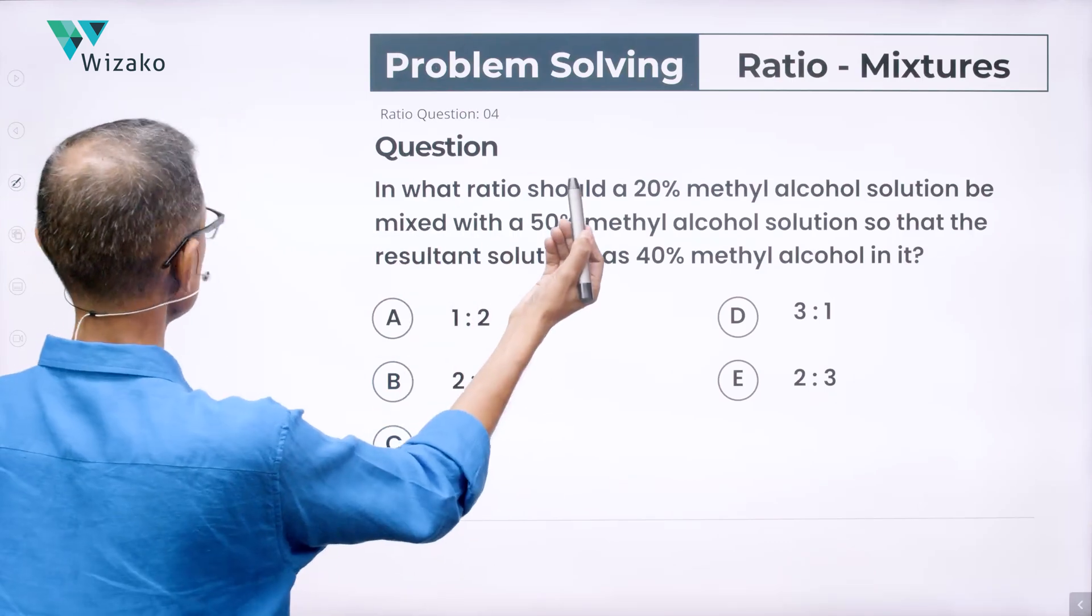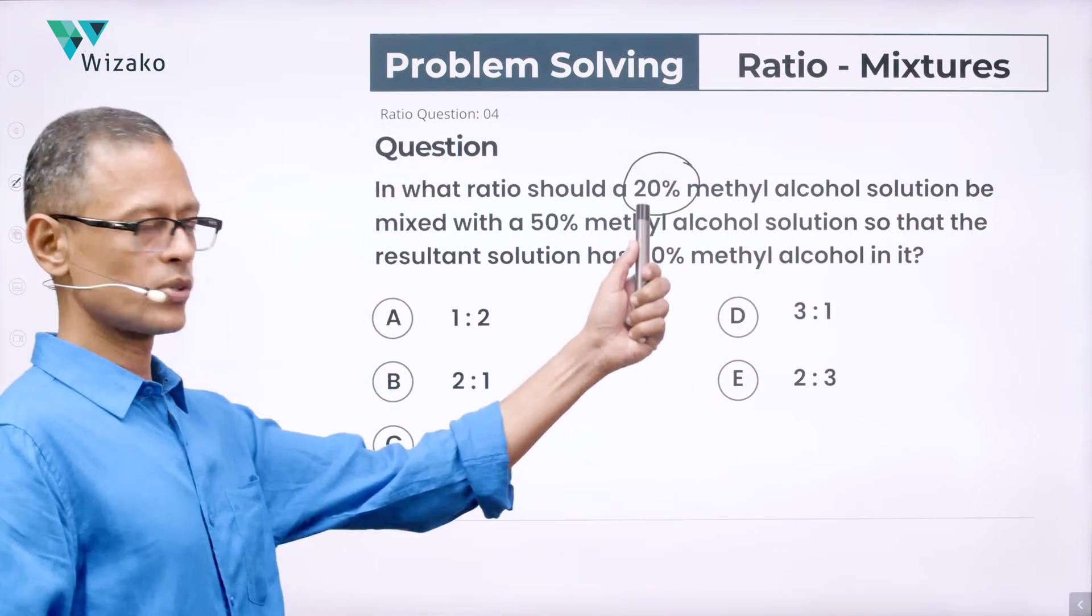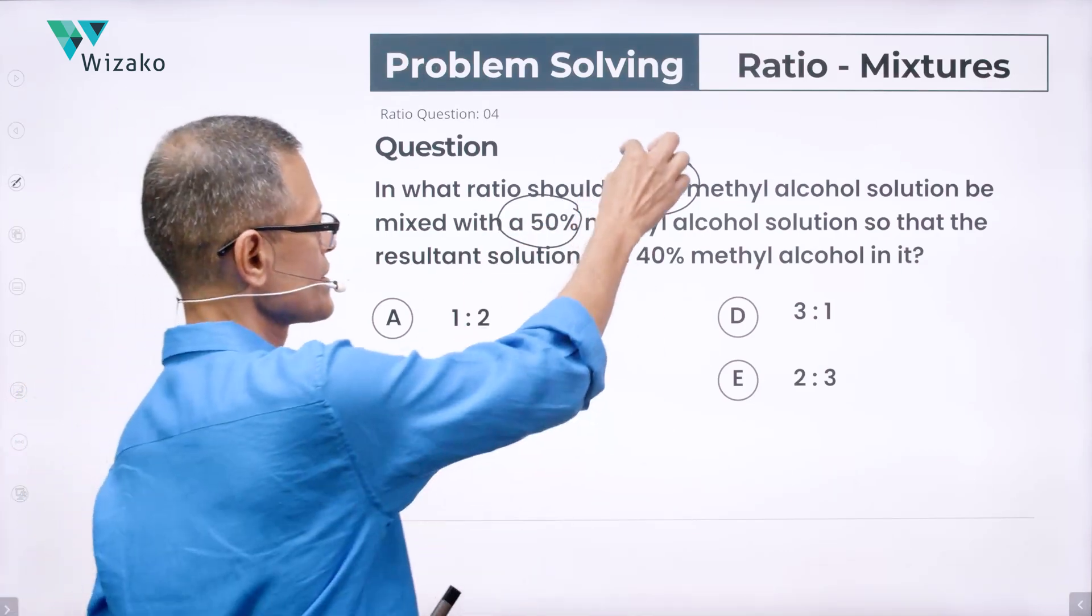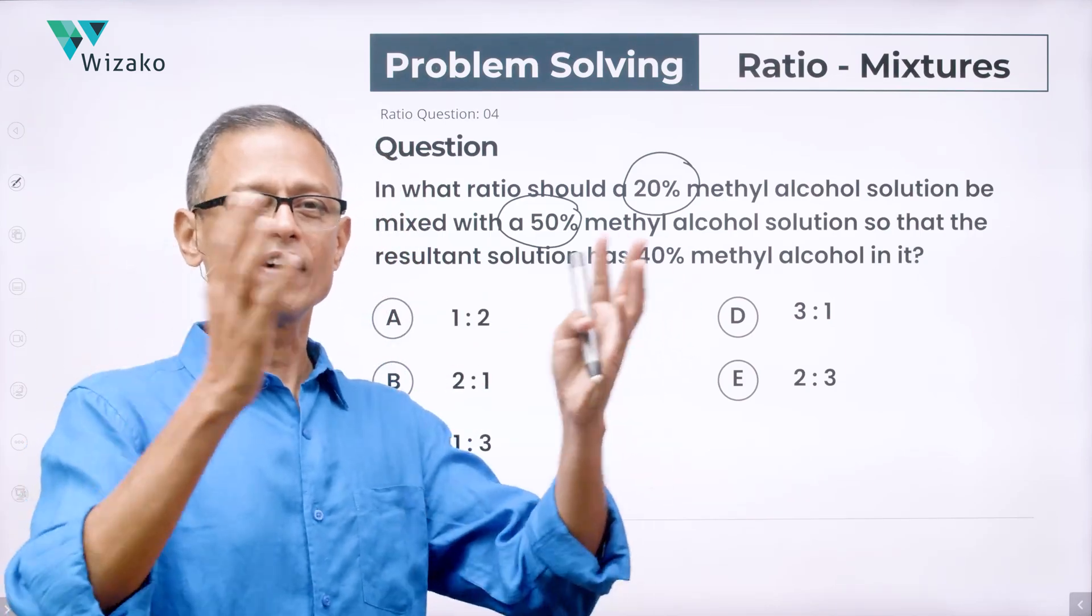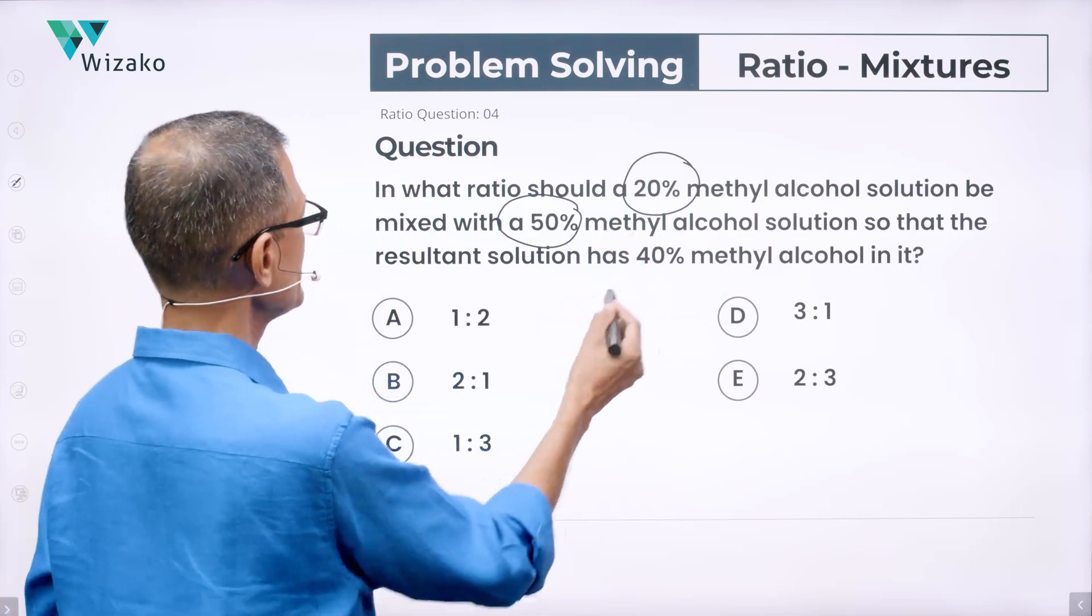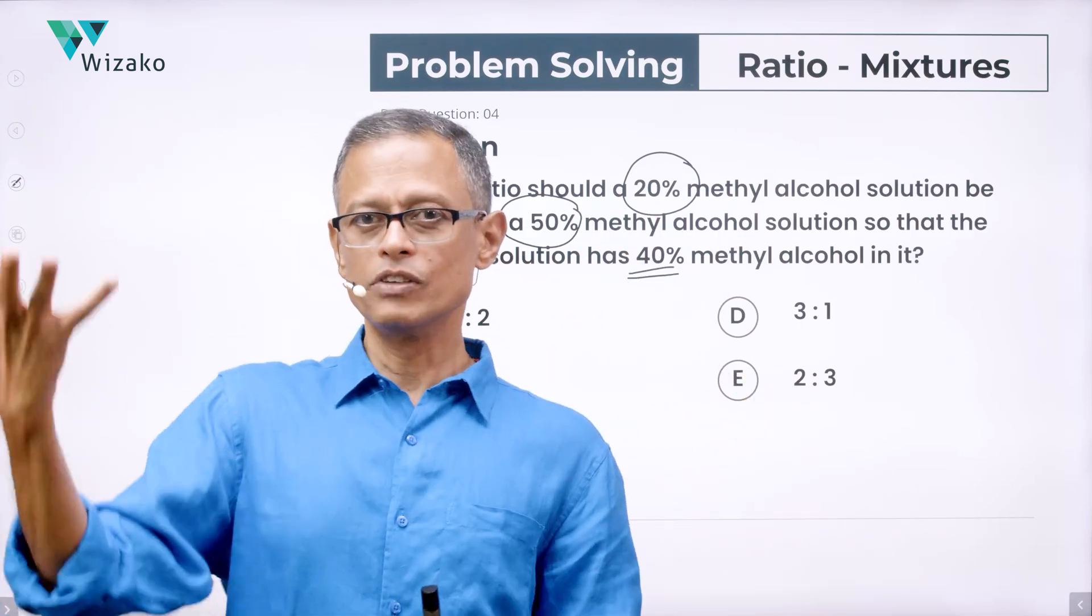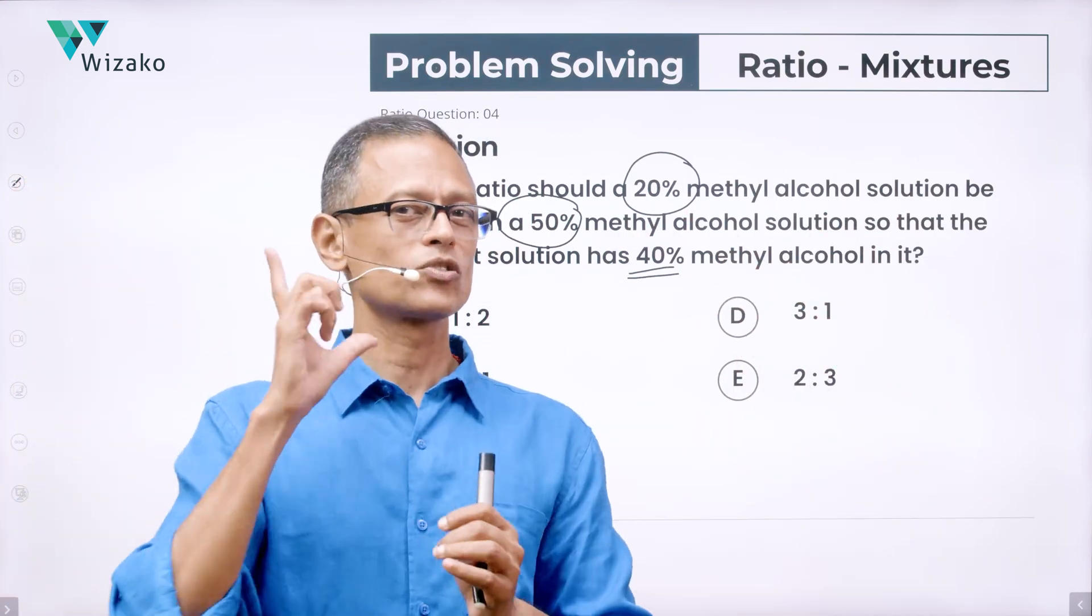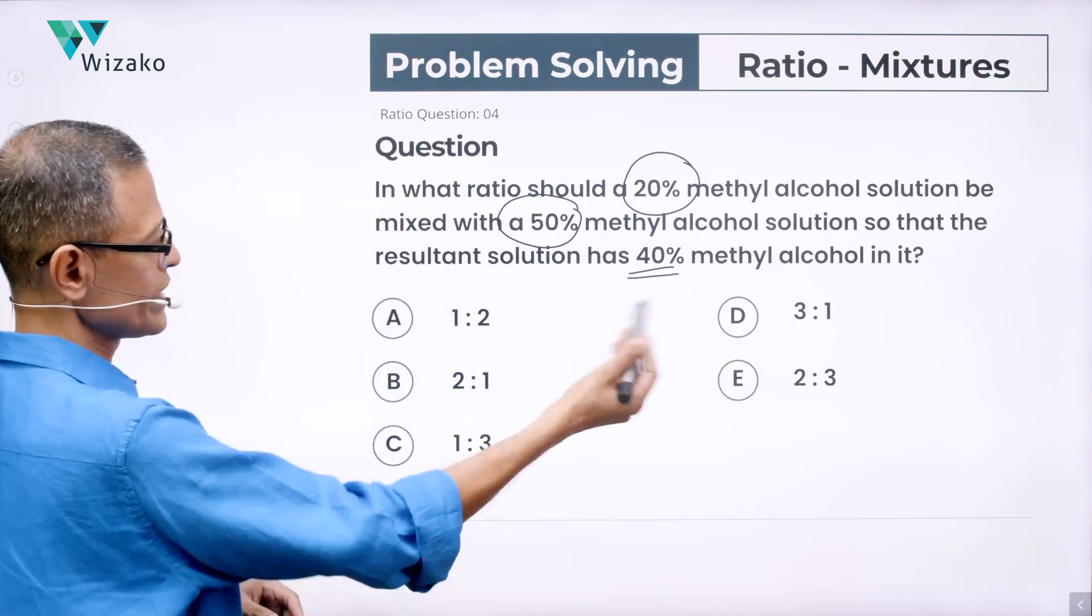So read this question: in what ratio should a 20% methyl alcohol solution be mixed with a 50% methyl alcohol solution? Lesser methyl alcohol in the first one, more in the second one. So you're going to get a final solution which is going to have something between 20 and 50, that's expected. How much does it have? It's got 40% methyl alcohol. You've got 20% methyl alcohol, 50% methyl alcohol. You put them together in some ratio so that what you get net-net has got 40% methyl alcohol. This is the ratio in which we should get one of these as the answer.